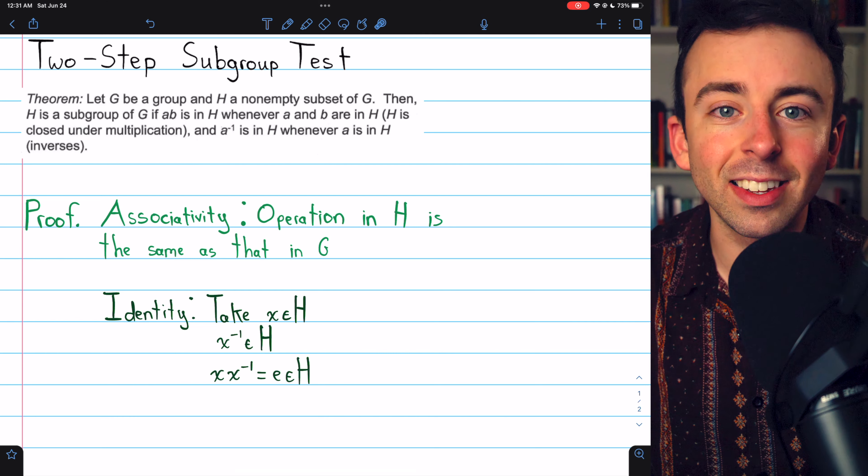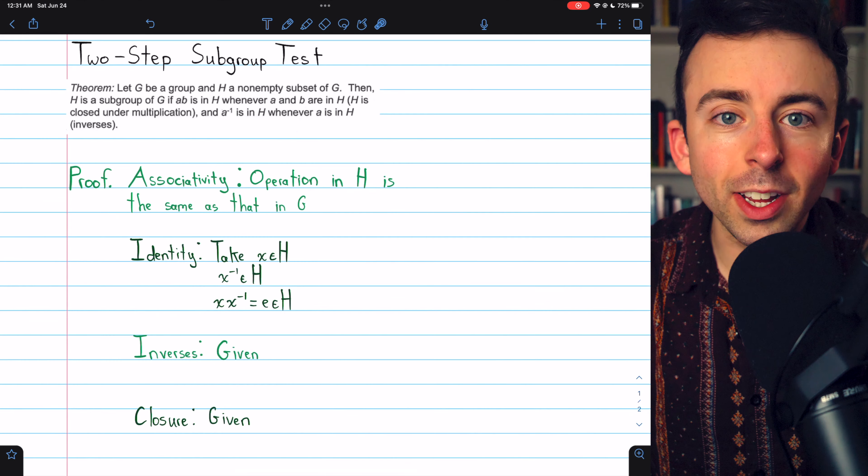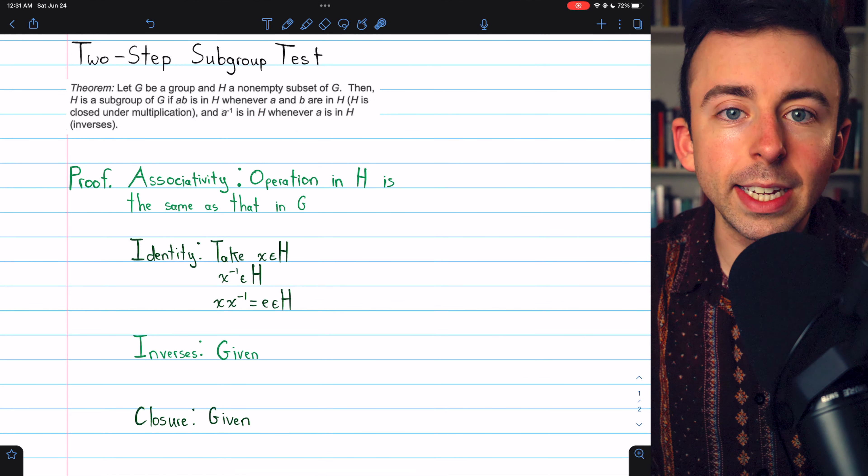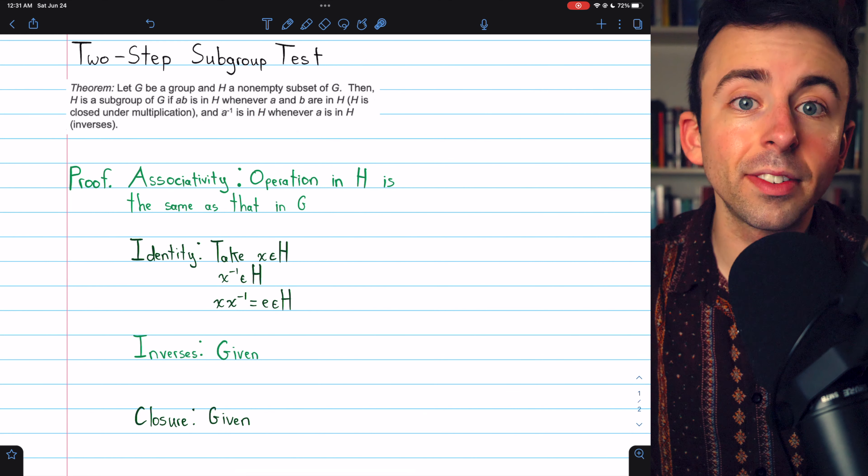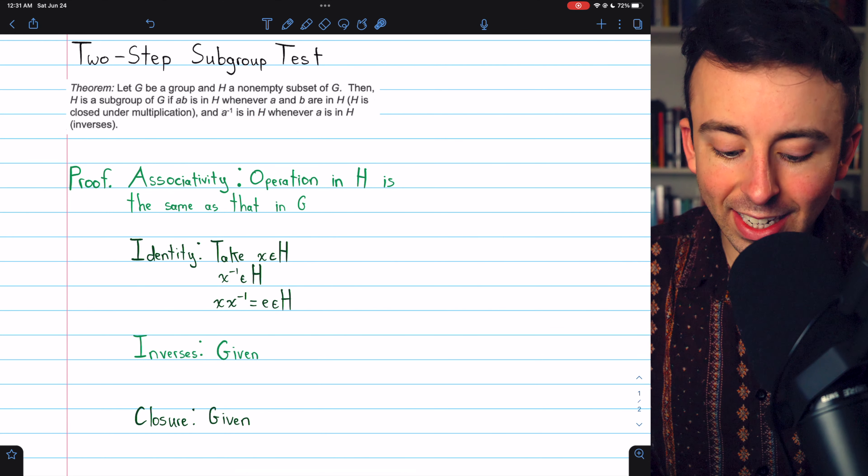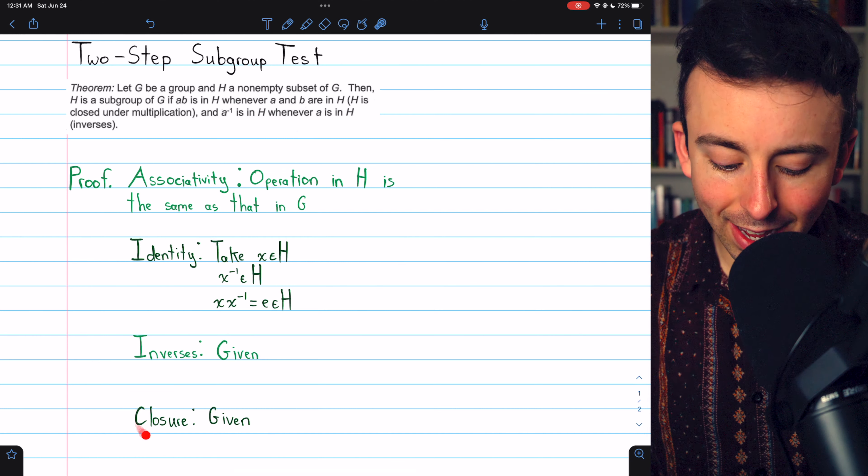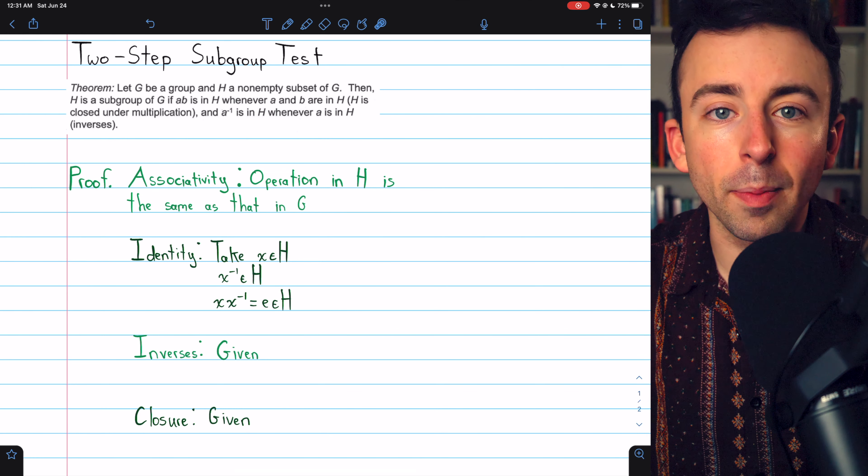So indeed, H does have an identity. And then we're done. The only other two properties we need to establish that H is a group, and thus a subgroup of G, are that it contains inverses and that it is closed with respect to the operation.